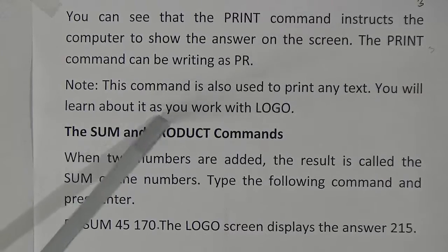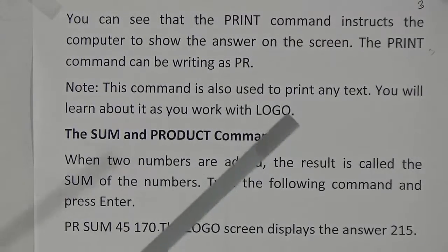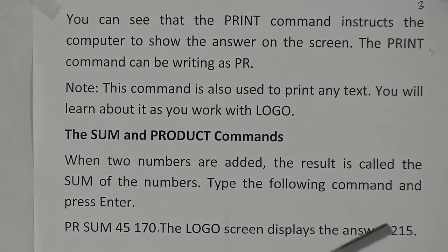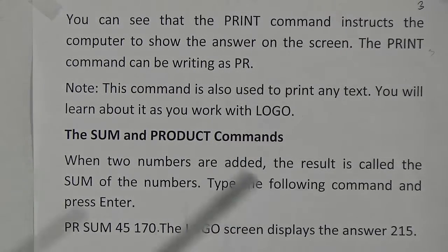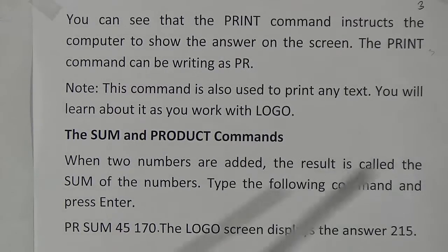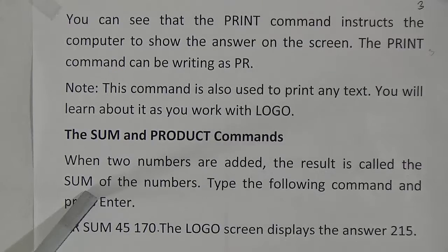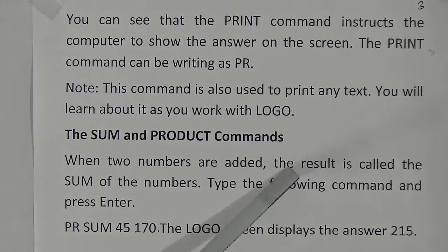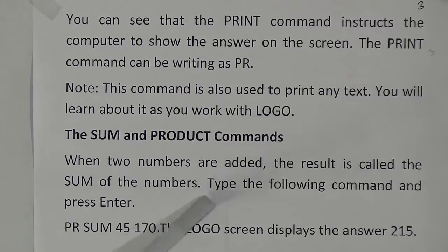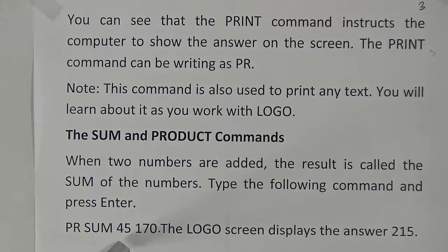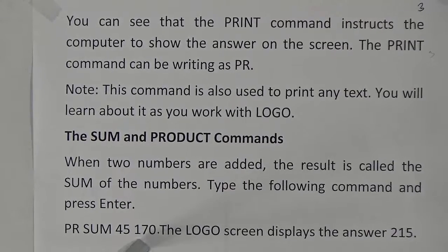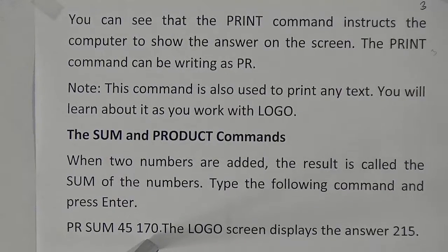Note: this command is also used to print any text — you will learn about it as you work with Logo. Now, the SUM and PRODUCT commands. When two numbers are added, the result is called the sum. Type the following command and press Enter: PR SUM 45 170. Don't forget to give a space between the numbers.